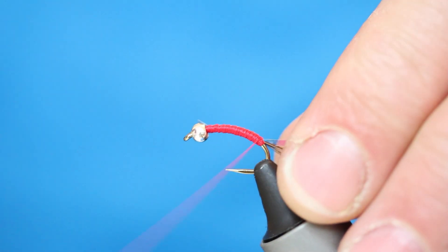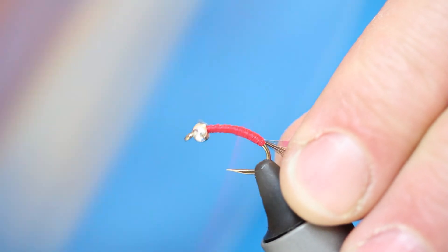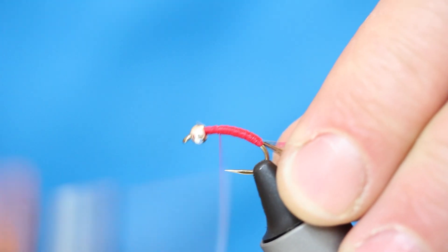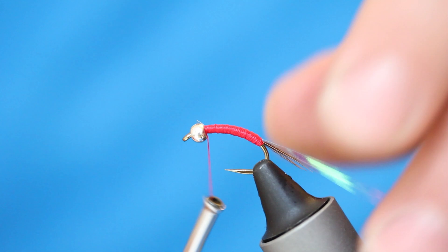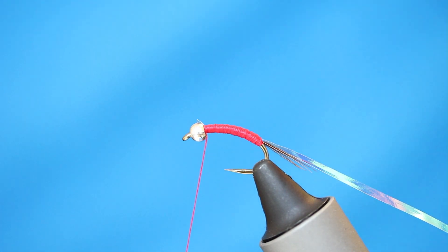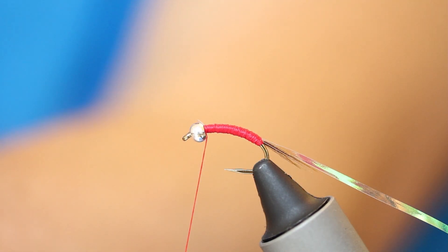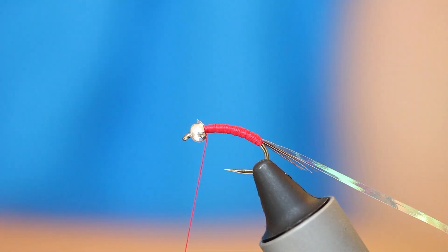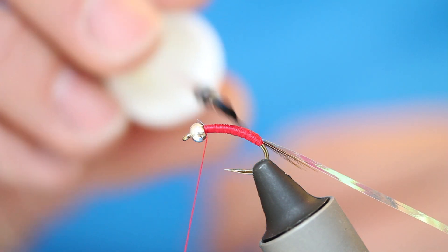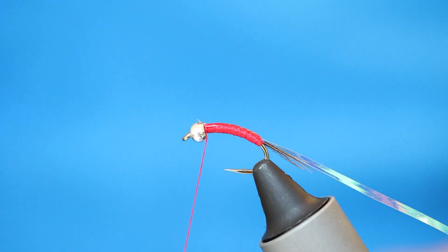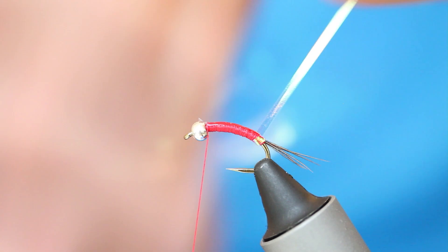And now what I want to do is, again, keep everything nice and even. So, touch and turn wraps all the way back up to the thorax area. And now what I do is get a little bit of varnish because I want this mylar to adhere to the floss. So just a little thin coat up over the back of the floss there. I've got my thread out of the way and I've got to wind this up in overlapping turns.